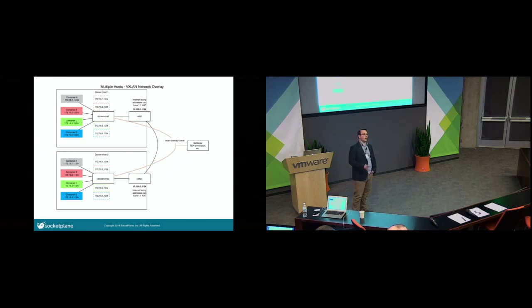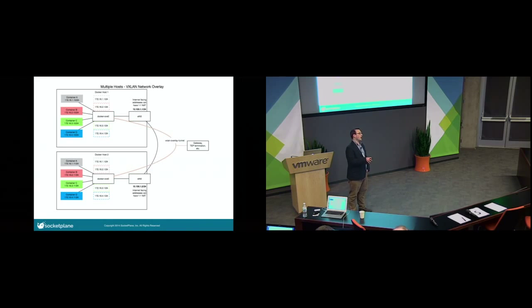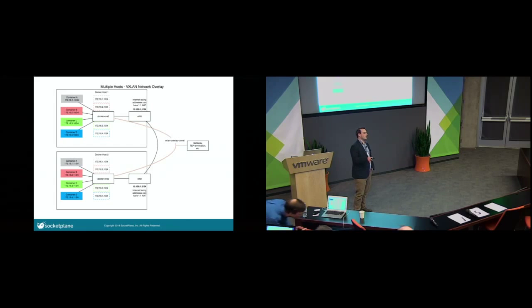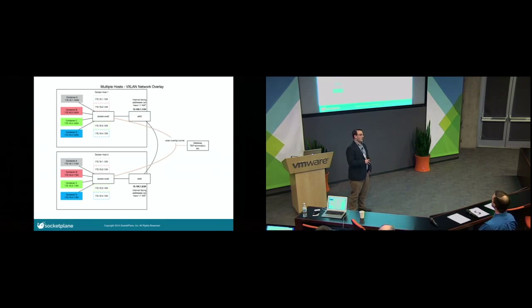Absolutely. I'll link you guys to the proposals we've put out into the Docker community, but our call to action is: if you have requirements, ideas, or ways you'd like to see Open vSwitch integrated, come into the discussion and let us know. Pipework is a really great thing, but nobody's going to deploy Docker in production with an external tool that needs to be called to do the networking, because the expectation is that it should be integrated.